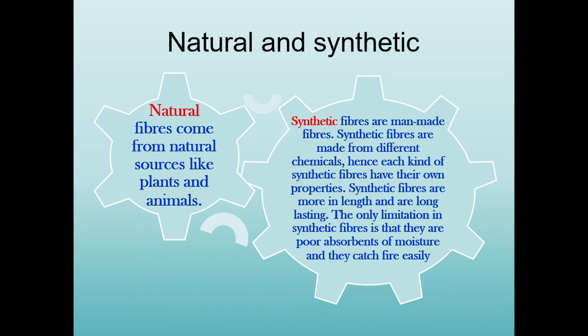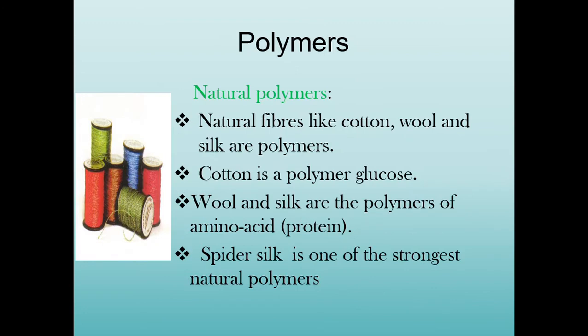Natural fibers are polymers. The word polymer comes from 'poly' meaning many — a polymer is made up of many repeating small units, and each such unit is called a monomer. Polymers like cotton and wool are natural fibers. Cotton is a polymer of glucose, and wool and silk are polymers of amino acids which form proteins.